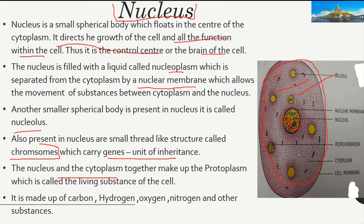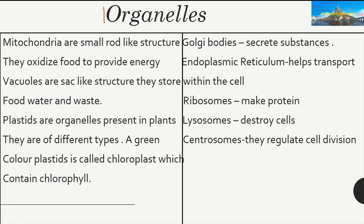Now we come to organelles — specific structures that do specific functions. First is mitochondria: when food comes into our cells as molecules during assimilation, it goes to the mitochondria where it is oxidized and we get energy. So mitochondria are small rod-like structures that provide energy. Next are vacuoles — sac-like structures that store food, water, and waste. They are mostly found in plants.